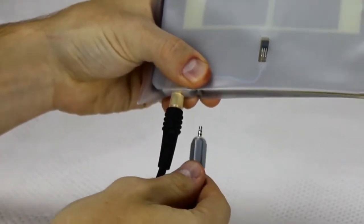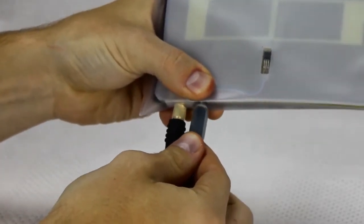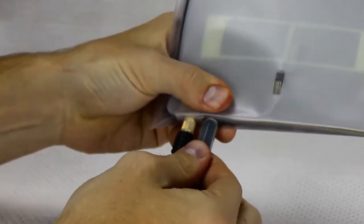To connect the gray cord, plug it into the hole next to the black cord. Next, connect the cords to the unit.